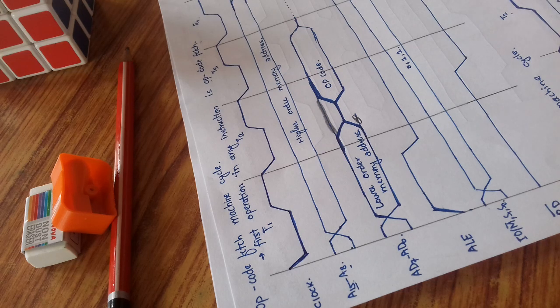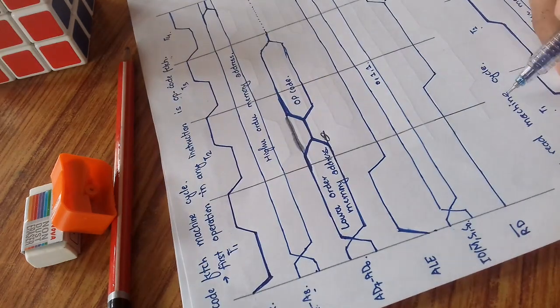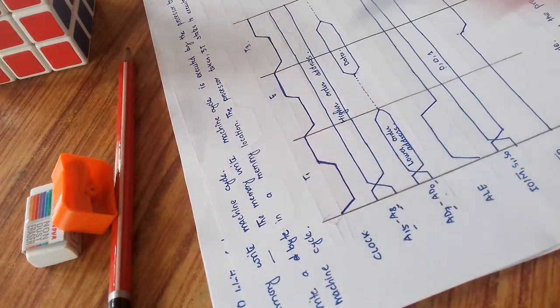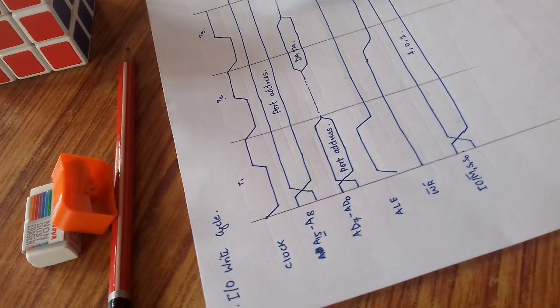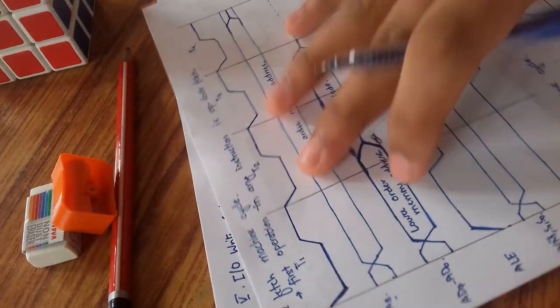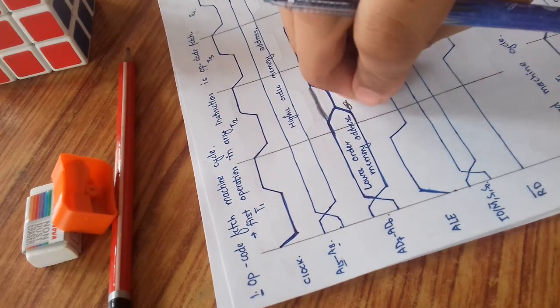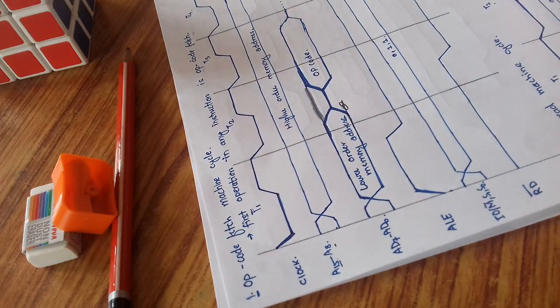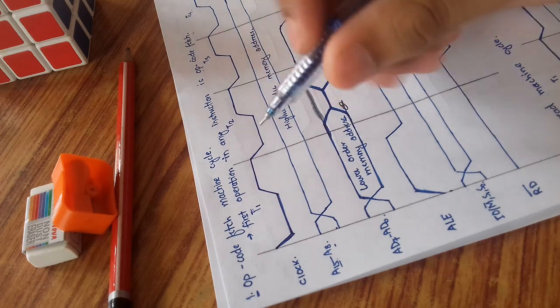Welcome to one of the important topics in microprocessors. Today's topic is machine cycle and bus timing diagrams. The operation of a microprocessor is generally classified into four main groups: opcode fetch, memory read cycle, memory write cycle, input/output read machine cycle, and input/output write cycle. We will discuss each of these cycles so that we can draw a machine cycle bus timing diagram for any given instruction.